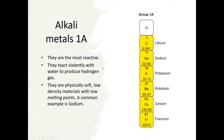Alkaline metals, Group 1A, are on the farthest left-hand side of the periodic table. A few points about alkaline metals: they are the most reactive. They react violently with water to produce hydrogen gas. They are physically soft, low density materials with low melting points. A common example is sodium. If you search sodium in water on YouTube, you'll see all kinds of interesting experiments with people throwing chunks of pure sodium into ponds and lakes, and you'll see that it actually reacts with water violently, creating fire - it's pretty spectacular.